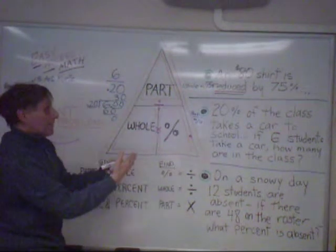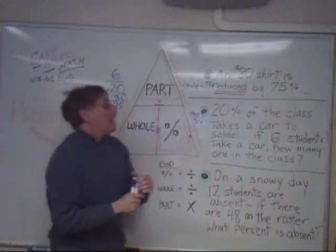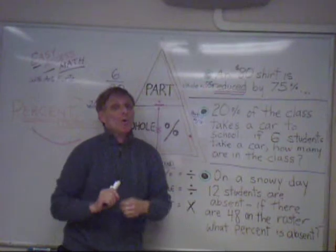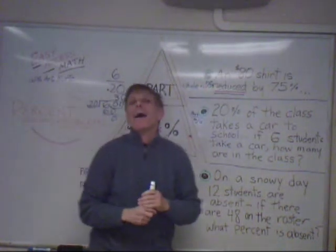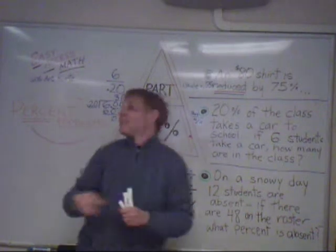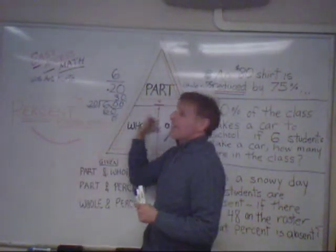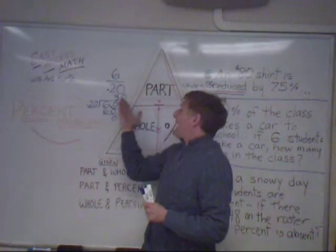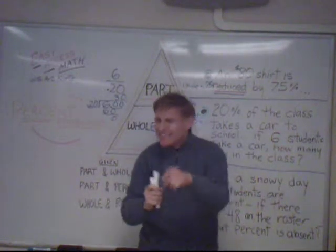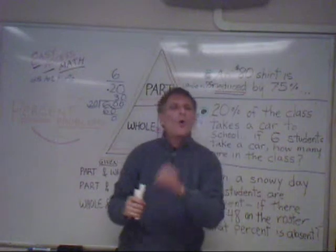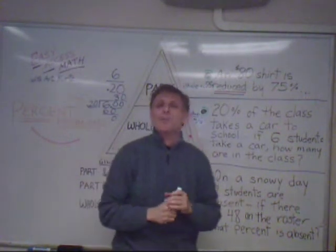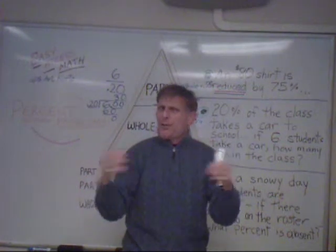So if twenty percent represents six students, you're looking for the whole. You have the part, you have the percent, you divide the part by the percent. Remember to move your decimal places when you do that, and you end up with your whole, which is thirty. The whole is usually — there are situations where it's not — but usually bigger than the part.